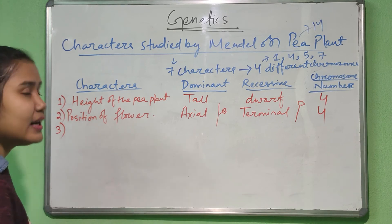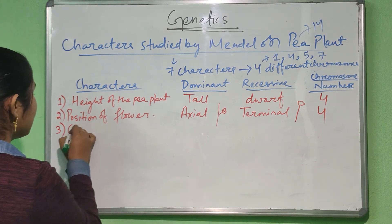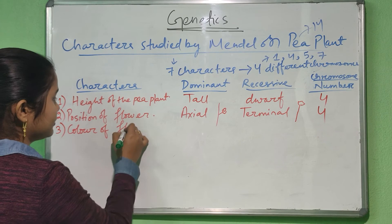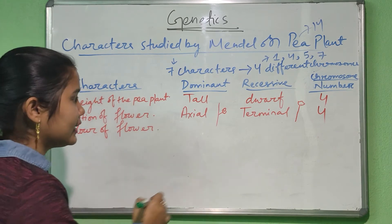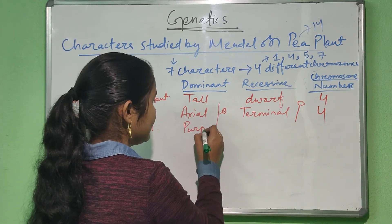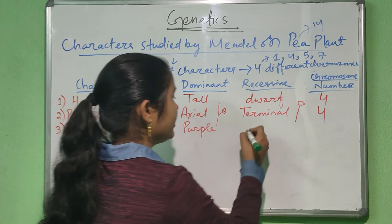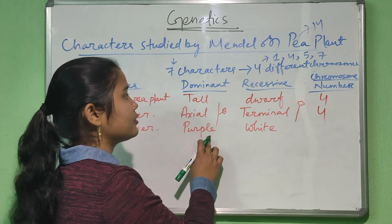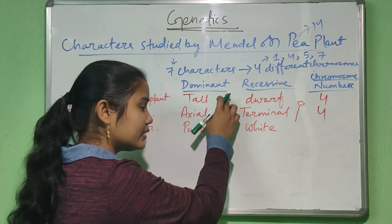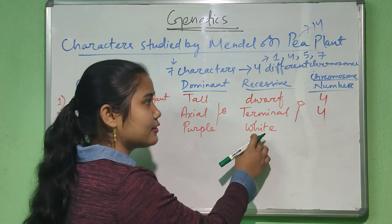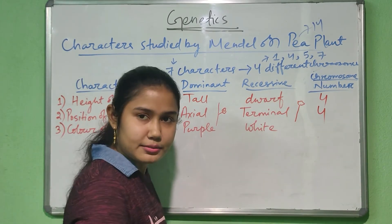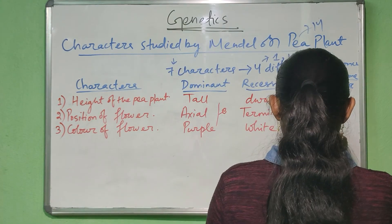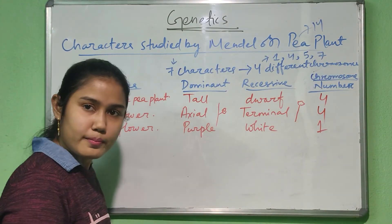The third character is the color of the flower. The flower color can be purple or white. The purple colored flowers are dominant while the white colored flowers are recessive. This character is located in the first chromosome.